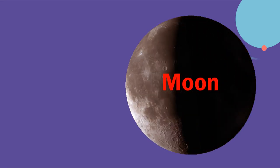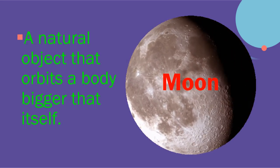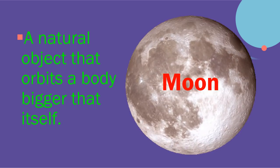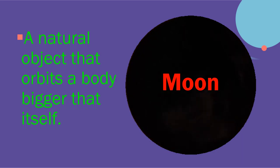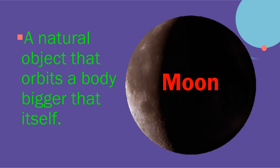Speaking of moon, the solar system contains many moons. Moon is a natural object that orbits a body bigger than itself. Earth and Mars are the only inner planets that have moons. The outer planets have many moons.